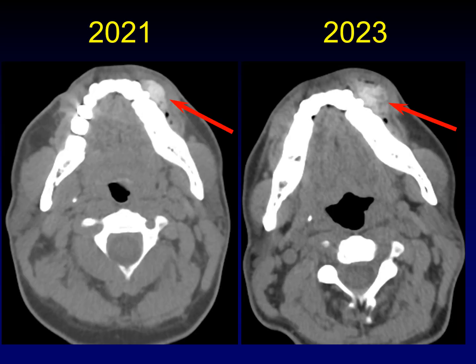Let's start with a potentially confusing patient. Here's a patient who was imaged two years apart, and you can see that this is much bigger than it was previously. That was very concerning to the interpreting radiologist. What would you call this, and what would you suggest that we do for this patient next?